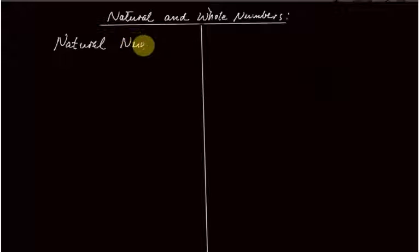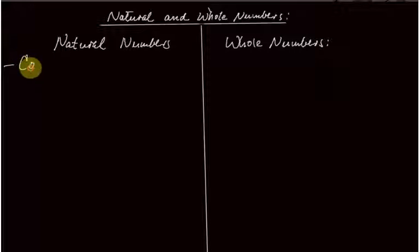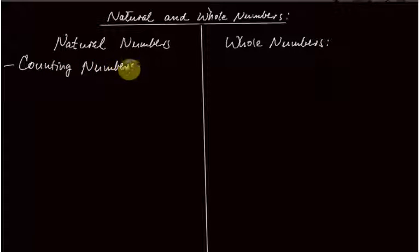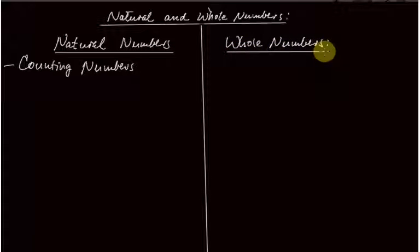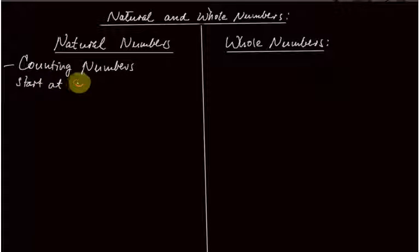Let us have two sides: natural numbers on one side and whole numbers on the other. Natural numbers are sometimes called counting numbers. Counting means counting objects — books, things — we can count a lot of things.